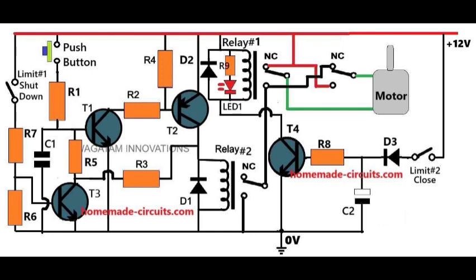This triggers transistor T4 to turn on through resistor R8. As a result, relay number 1 flips its contacts to the normally open, NO, position. This clever use of the relay reverses the motor's direction, causing the door to close.